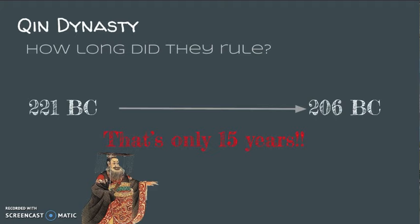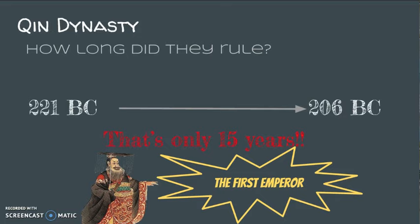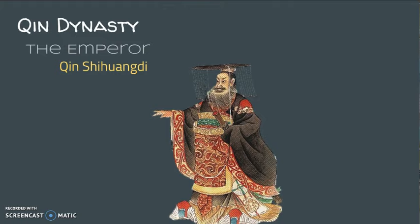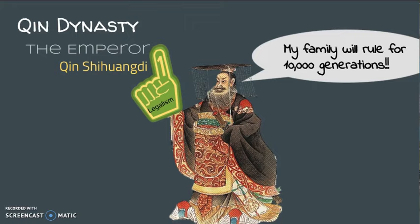Here is the guy in charge for most of those years. He is known as Emperor Qin Shi Huangdi. He was a big fan of legalism, and he also said that he wanted his family line to rule for 10,000 generations. That's a pretty long time if you are doing the math.